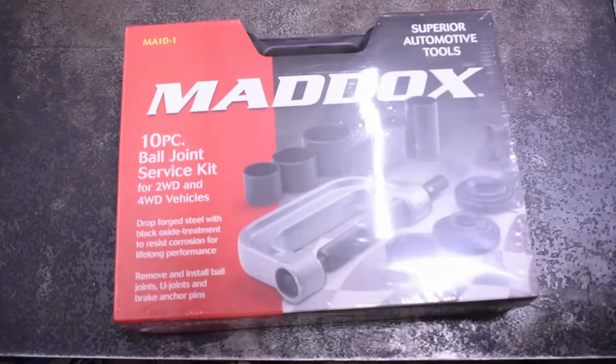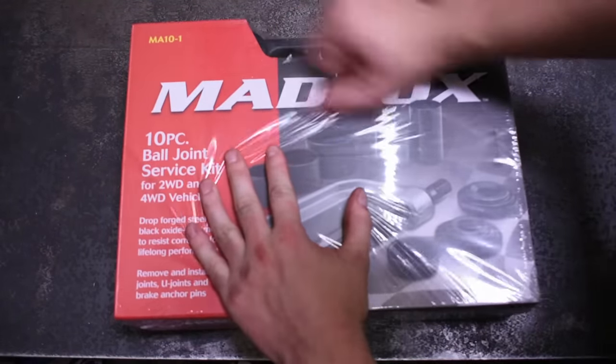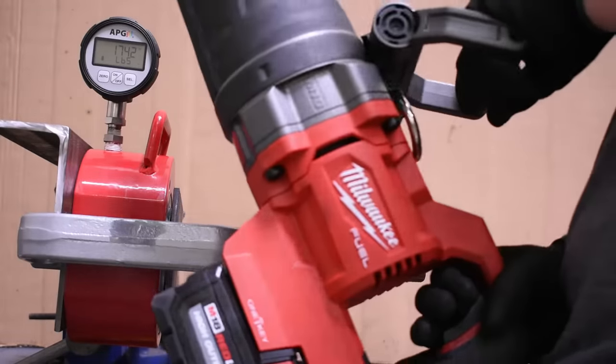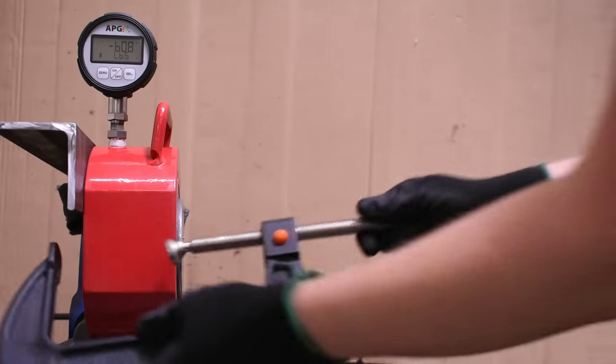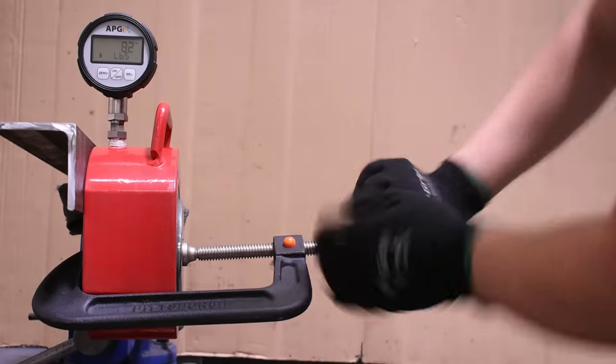Welcome back to the Torque Test Channel and welcome to the first episode of our new press test series where we use a 100-ton ram, 2000 foot-pound Milwaukee 1-inch drive D-handle, or both to test really anything you guys want: C-clamps, automotive pullers, or in today's case, ball joint presses.